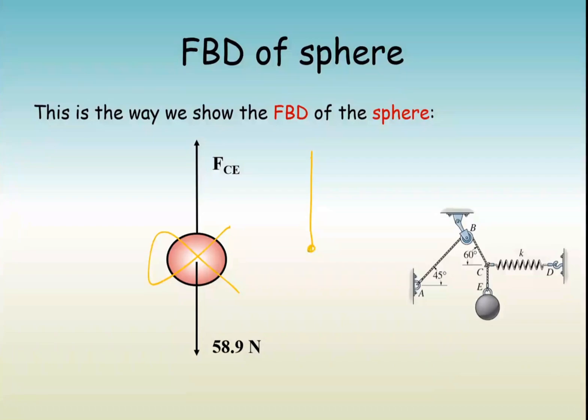I would do this: one point and 58.9 Newton, and that is my FCE. That's much better. Don't make a big circle. This is a much better way of doing it.